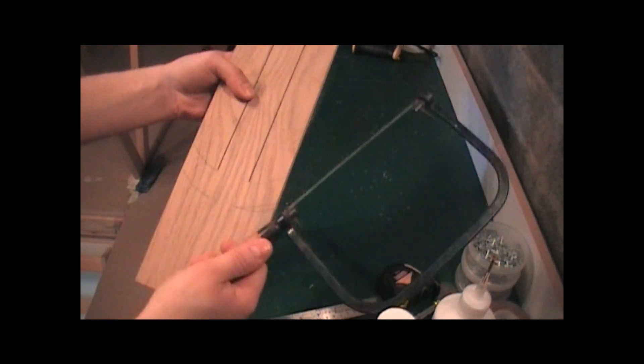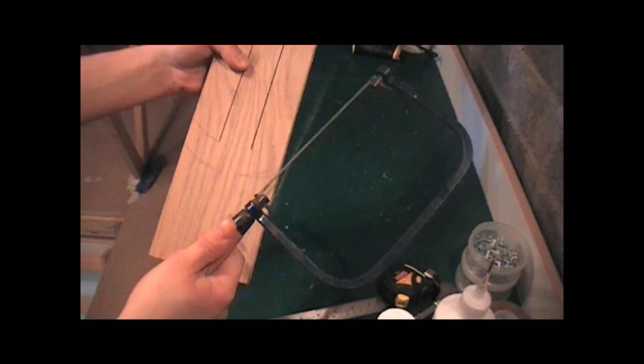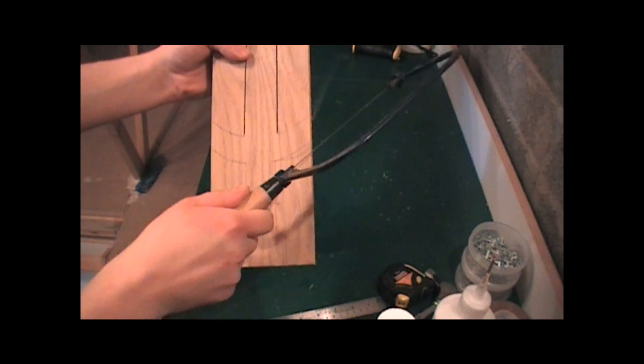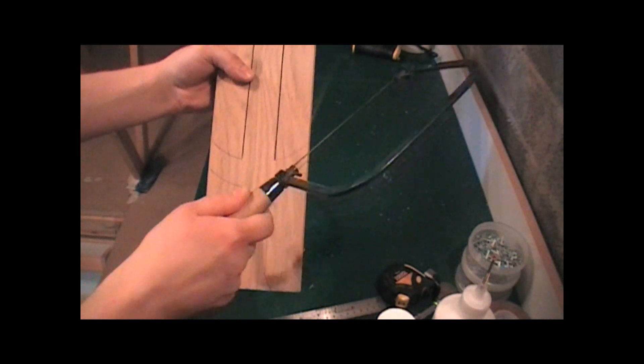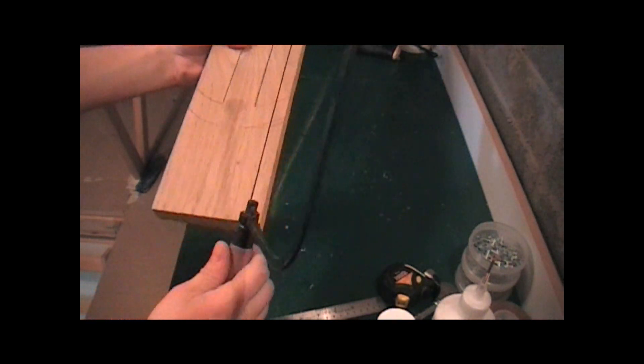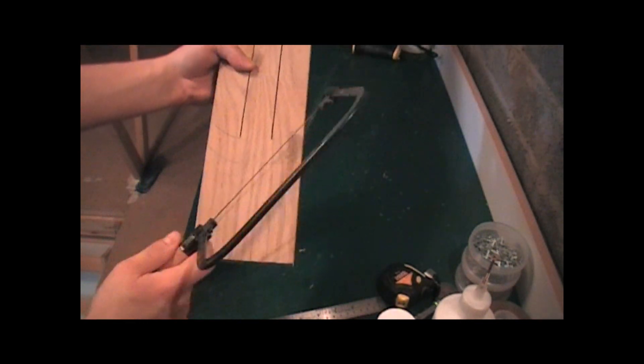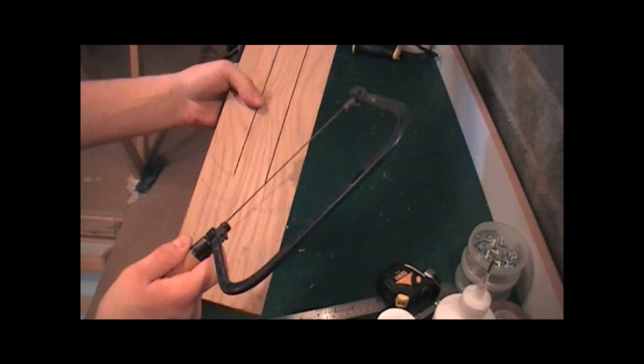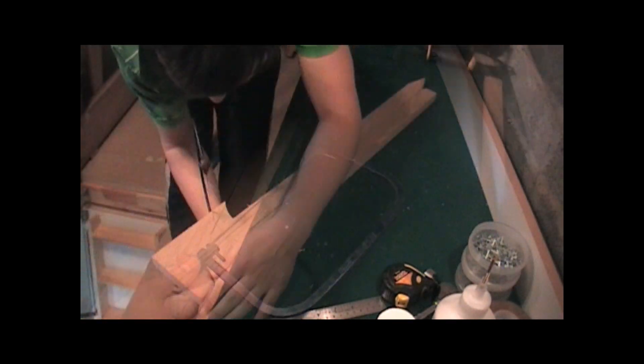And now I'm going to use this little handsaw. It's specifically made for round corners or any tight corner. So that's what I'm going to do now. I'm going to start off with this and show you how it works, and then I'm going to finish it off with my jigsaw there.